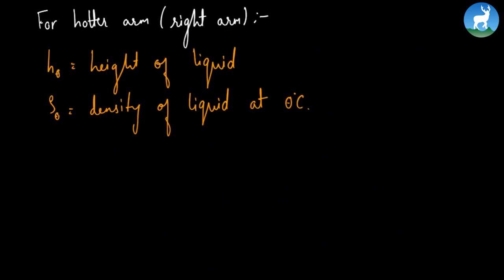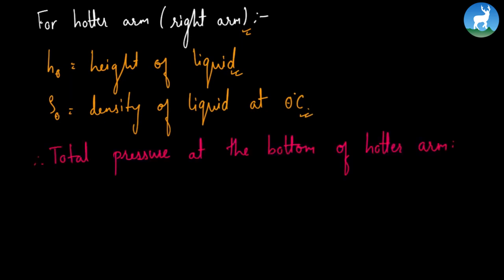For the hotter arm (right arm), S_θ is the height of liquid and ρ_θ is the density of liquid at θ degrees Celsius. Total pressure at hotter arm PC equals H_θ ρ_θ g plus atmospheric pressure P_ATM.